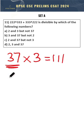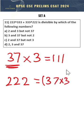So now we can write 222 as 37 times 3, which will give 111 times 2.